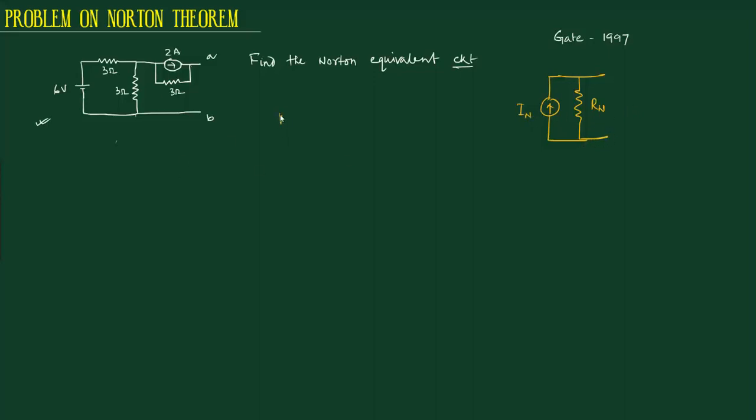Rn is the resistance appearing across AB when all sources are replaced by their internal impedance.